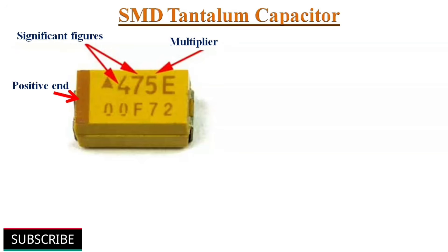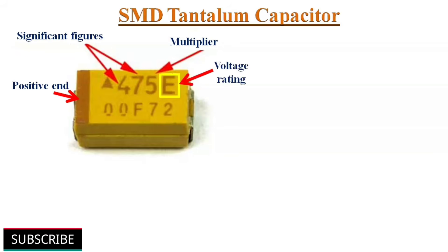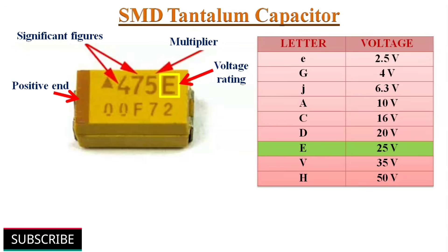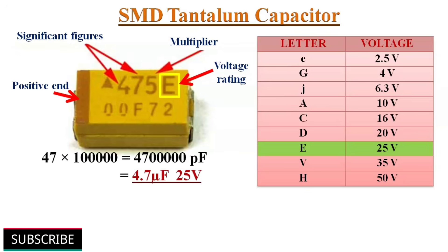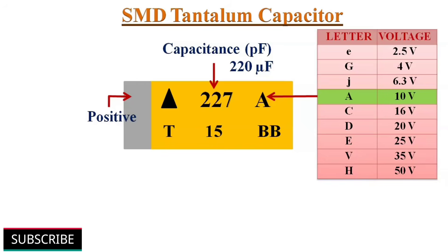In many cases, the three-figure format is used, where the first two digits indicate significant figures and the third digit indicates a multiplier. The alphabetic letter indicates the voltage rating. A table shows the voltage rating values for different alphabetic letters. The capacitor shown here has a capacitance value of 4.7uF with a voltage rating of 25V.